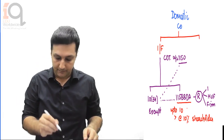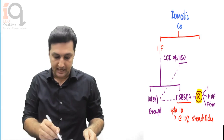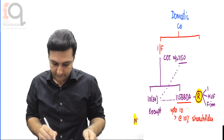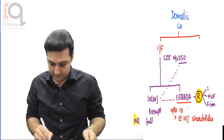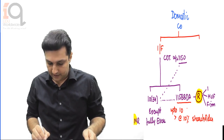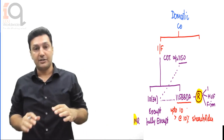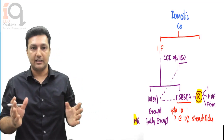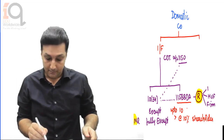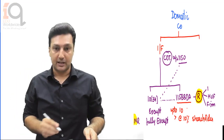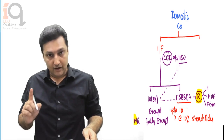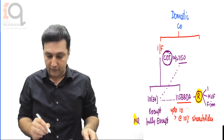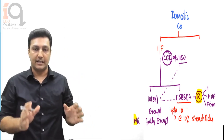This means that because 115BBDA applies only to a resident, for a non-resident shareholder, whatever dividend received is fully exempt. For a resident shareholder it is exempt up to 10 lakhs, and in excess of 10 lakhs it is taxable at 10%. But corporate dividend tax under 115O is going to be payable by the company on all dividends, whether covered under 115BBDA or 10(34).